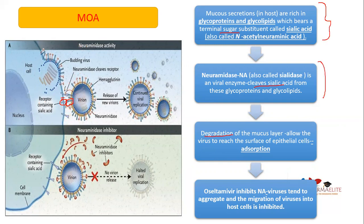The drug molecule Oseltamivir will go and bind to neuraminidase, as you can see here. It is binding to neuraminidase and inhibiting its action. So there will be no cleavage of sialic acid from glycoprotein and lipid, no degradation of the mucus layer. The mucus layer remains intact, so the virus cannot enter the host cell and the infection is prevented.